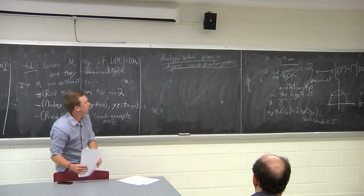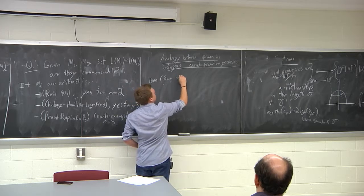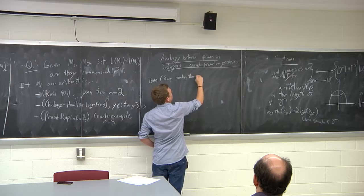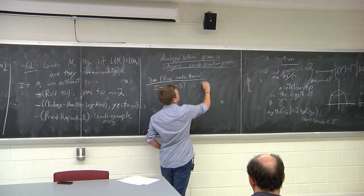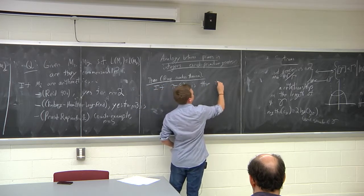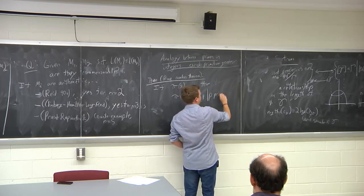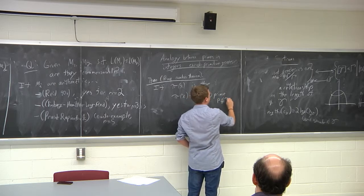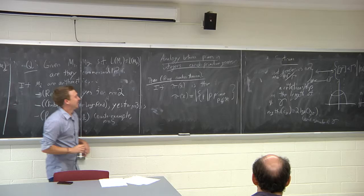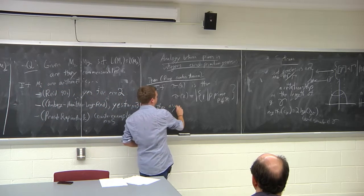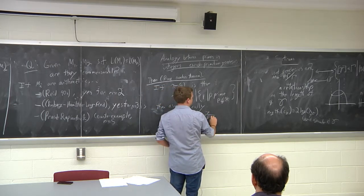The first and most surprising such translation is the prime number theorem. The classic prime number theorem says that if pi(x) is the cardinality of the set of primes p less than or equal to x, then asymptotically this function behaves like x / log x.